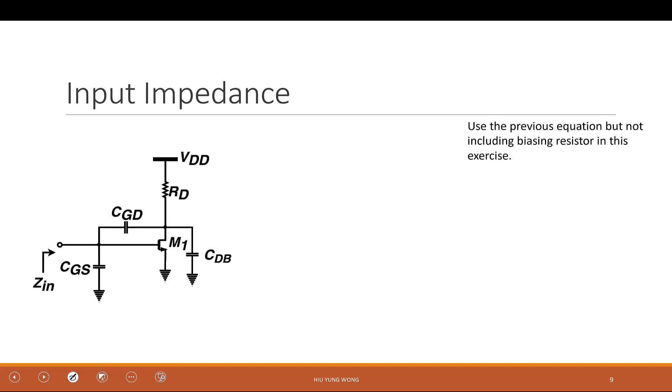Then find the input impedance, which is not too difficult. What is the definition? How do you find the input impedance? Again, Vin divided by Iin when Iout equals zero, when open circuit at the output. So this is already the correct one.